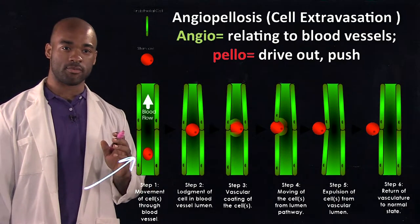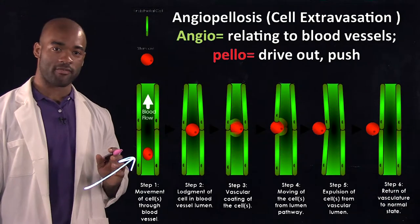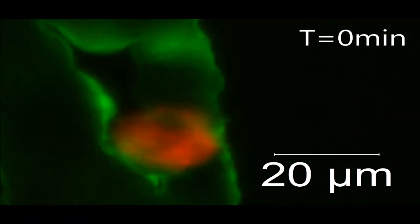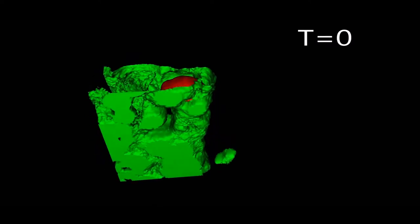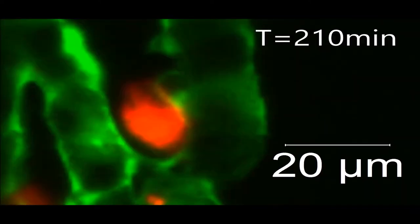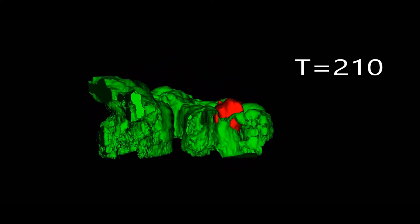Once in the surrounding tissue, it can then exert its regenerative or therapeutic effects. Using intravital light sheet microscopy and 3D rendering, we're able to see exactly where the cell is in relation to the blood vessel and the vasculature and the method that it uses to extravasate.